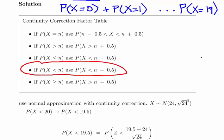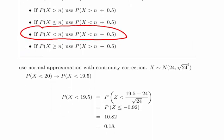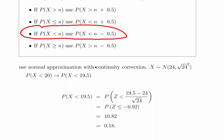First off, we're going to use normal approximation with a continuity correction. What we're going to state here is that the mean is 24 and that the variance is 24.